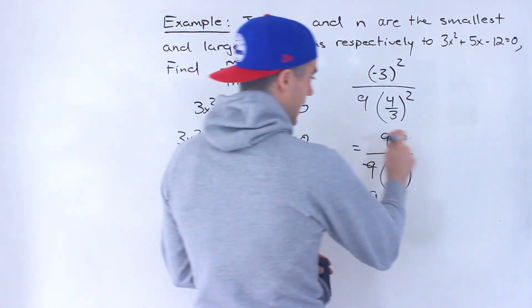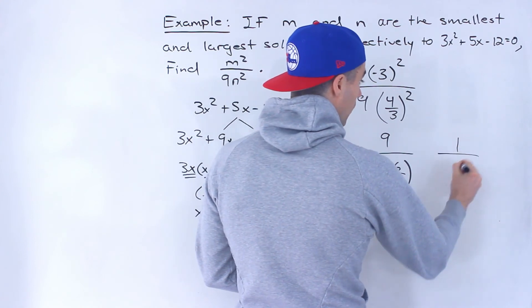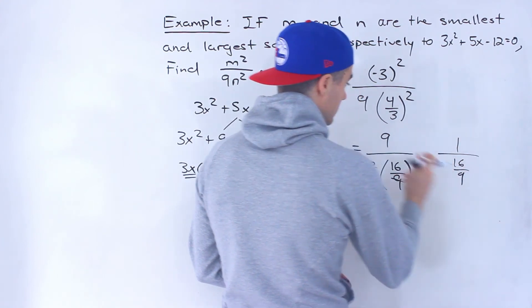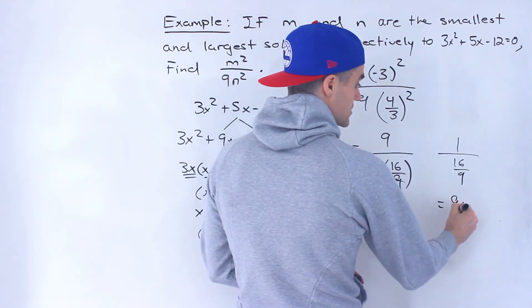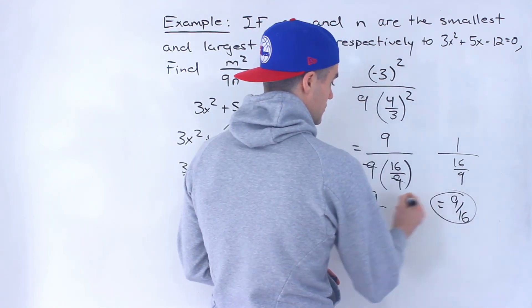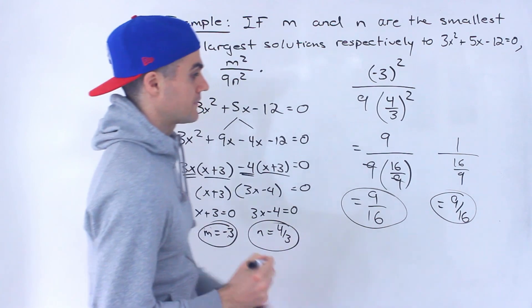Another way is that these 9's could cancel out, so you'd be left with 1 over 16 over 9 if these two 9's cancel out. And then 1 over a fraction is just the reciprocal of that fraction. So whichever way you do it at this step, 9 over 16 is the final answer.